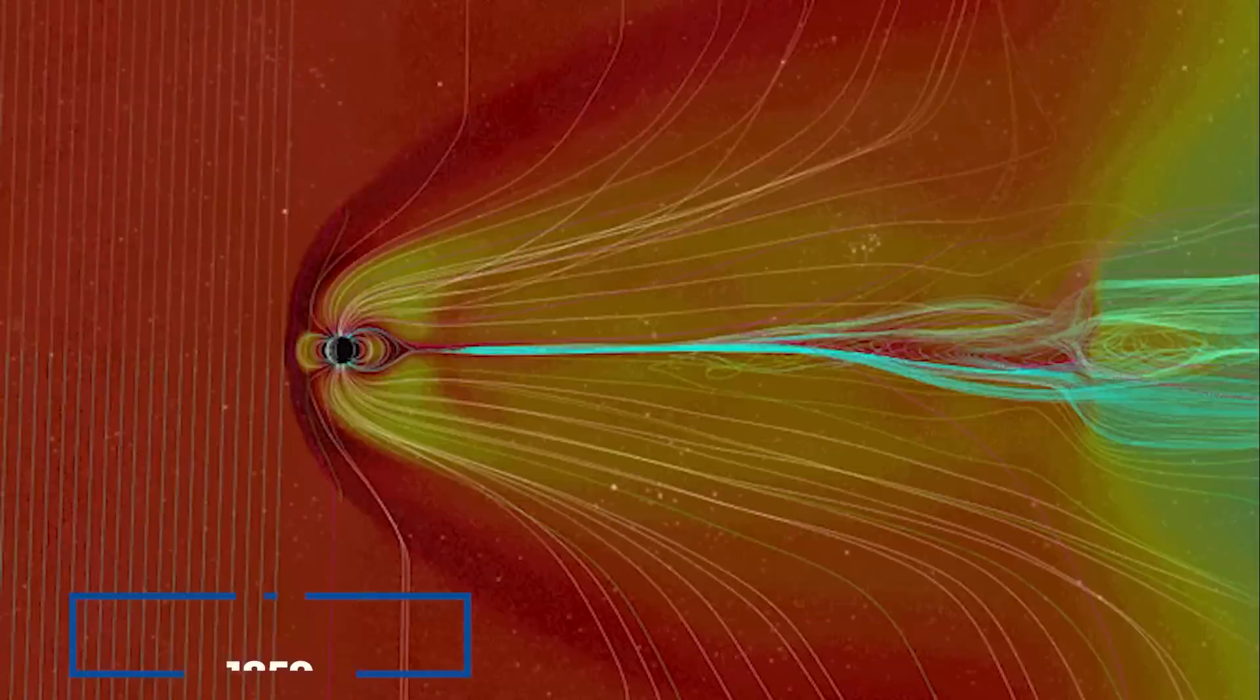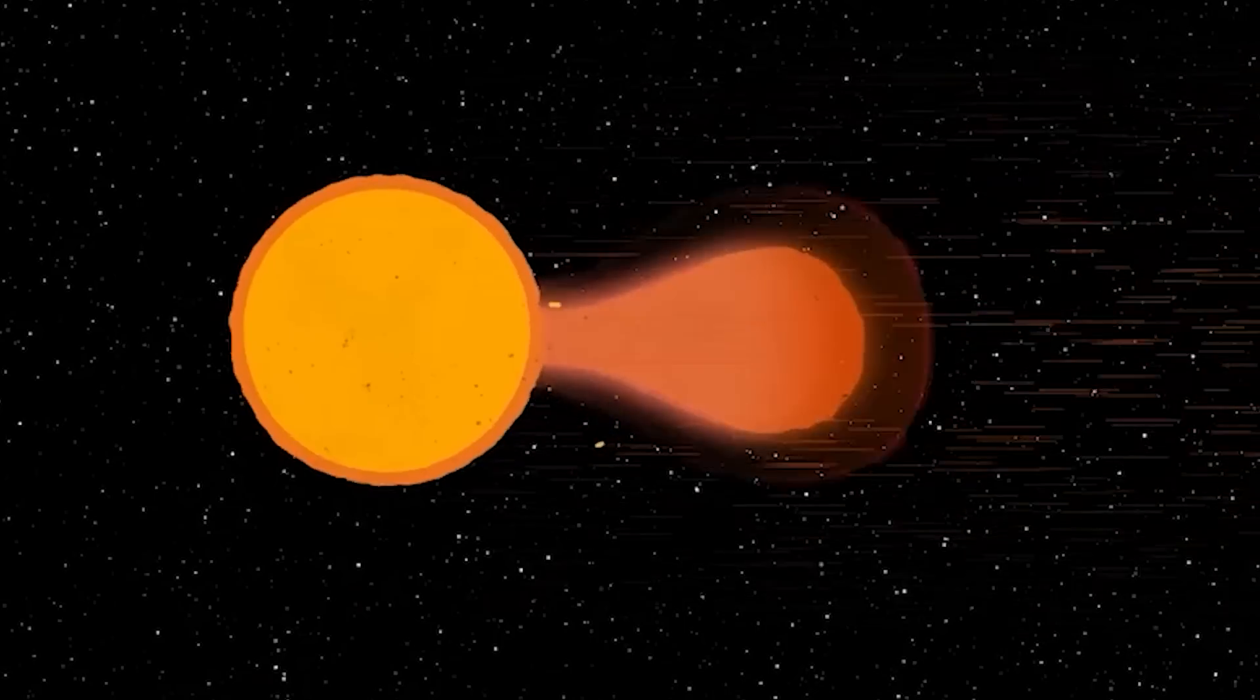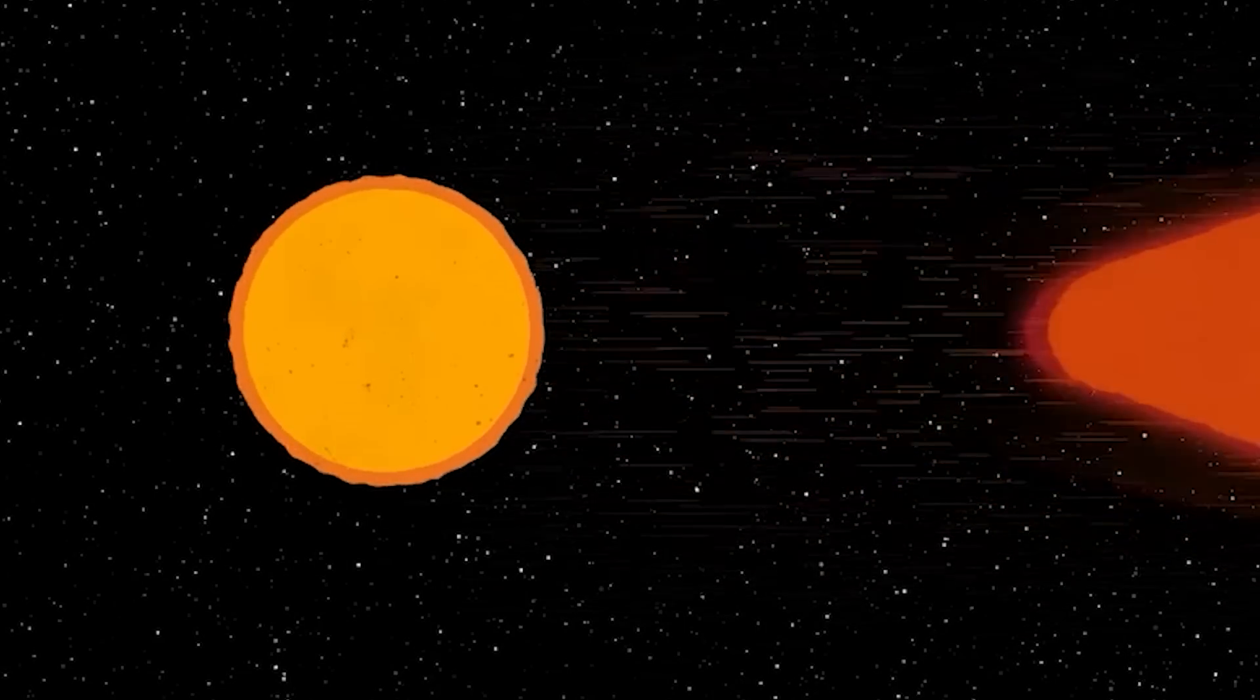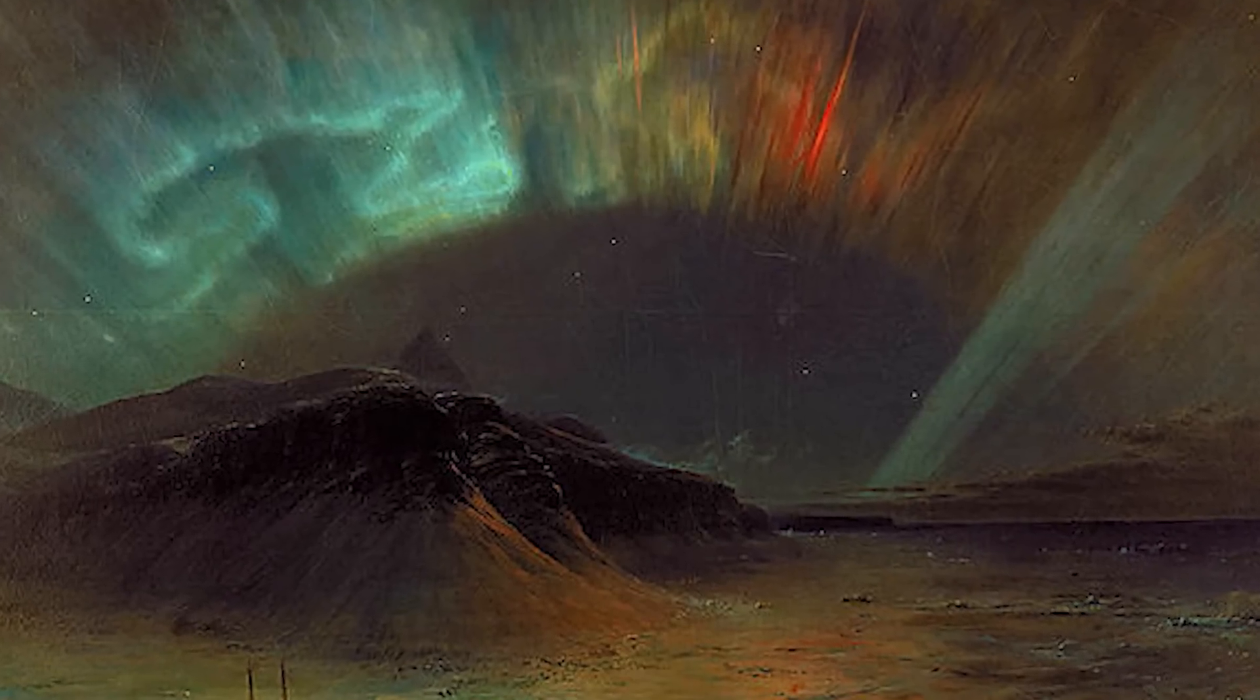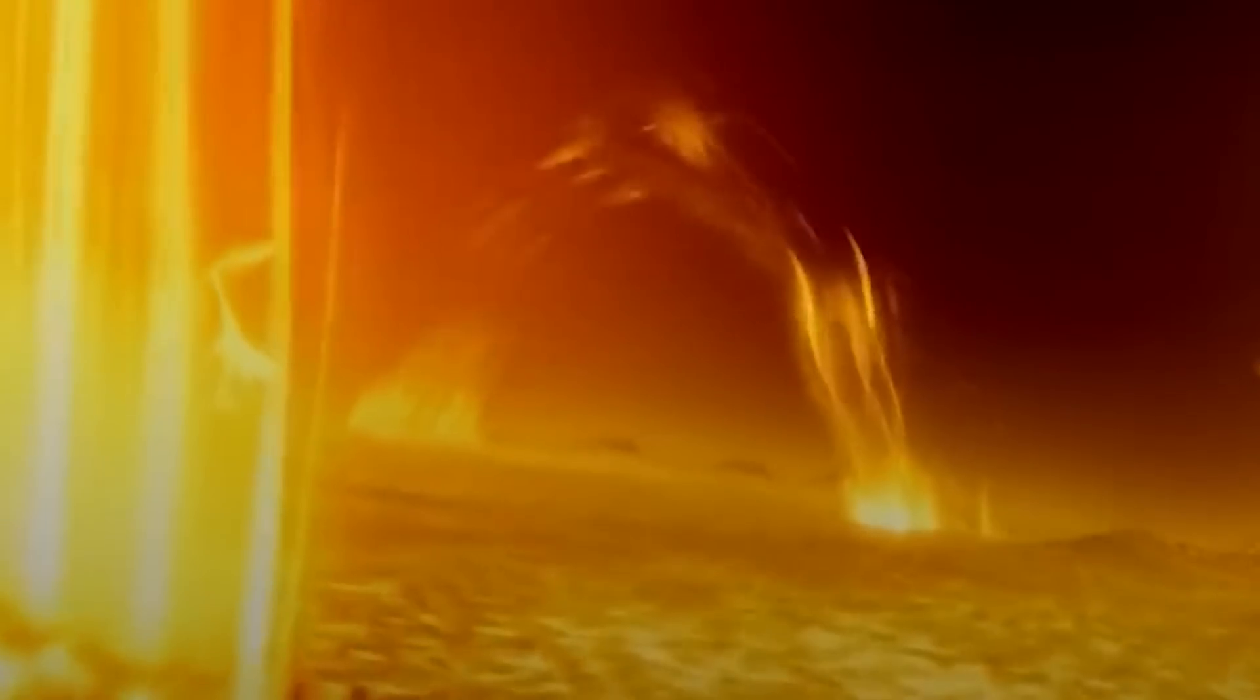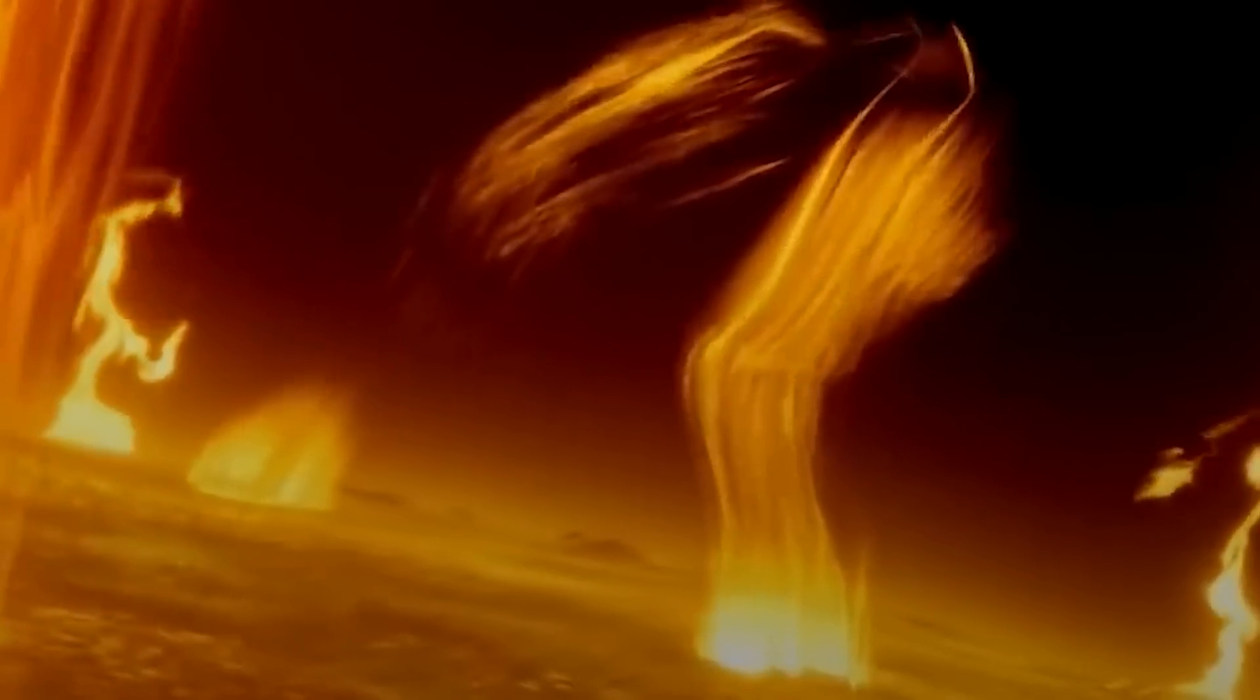In 1859, the Carrington event produced the largest solar storm ever recorded, causing damage to telegraph systems around the world and creating auroras brighter than the full moon. With all this in mind, should CERN take extra caution with their experiments in future? Let us know your thoughts in the comments section below.